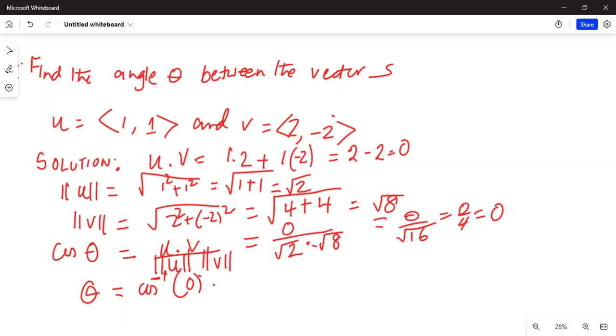you will find cosine inverse of 0 is 90 degrees. Hence the angle theta is 90 degrees, or you can write it as pi over 2.